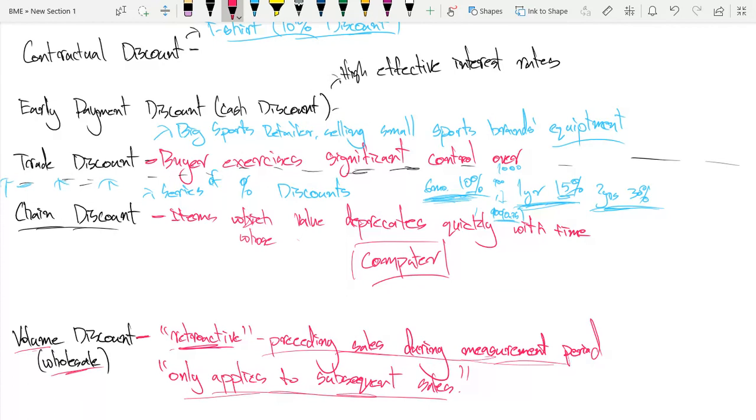This discount can be retroactive. So this means all preceding sales during measurement period. So if you have a measurement period of one year, and then you reach the amount of sales in that one year, you will gain a retroactive discount on the sales for that year. So you'll get some money back on that sales, or it may apply to all subsequent sales. It could be retroactive and also applying to all subsequent sales.